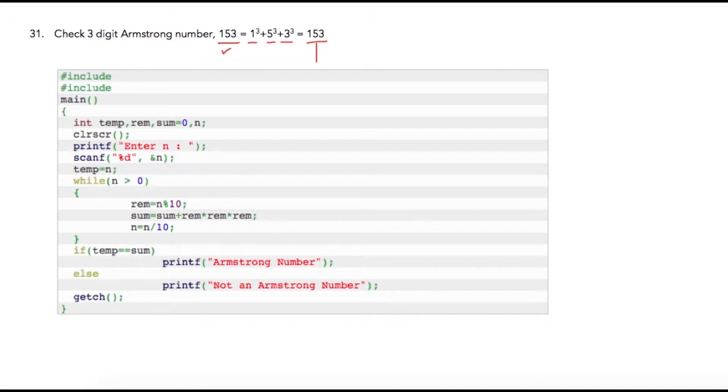Let us take another example. If user has entered 100, cube of each digit is 1, hence 100 is not an Armstrong number.